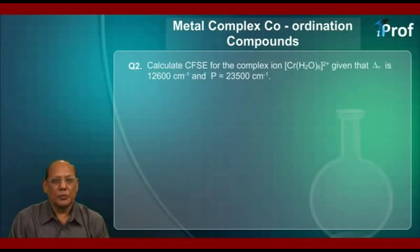Question number 2. Calculate CFSE for complex ion [Cr(H2O)6]2+ given that Δₒ is 12,600 cm⁻¹ and electron pair energy P is equal to 23,500 cm⁻¹.